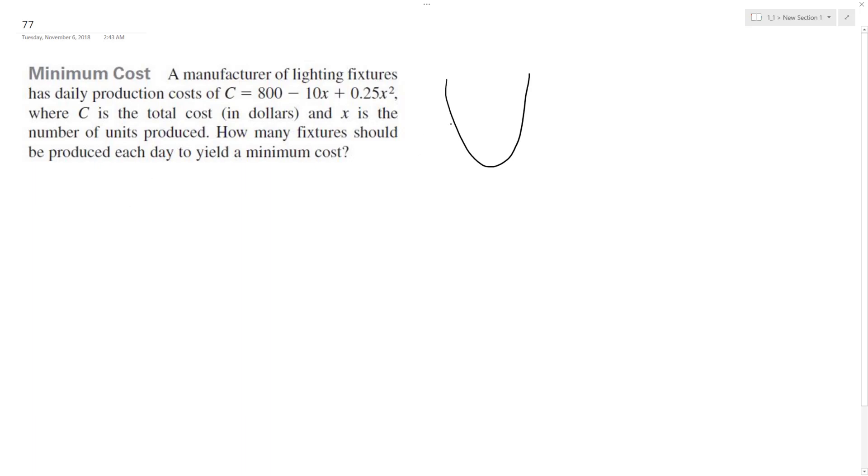And the minimum of any parabola to find the vertex or the line of symmetry, we do negative b over 2a.